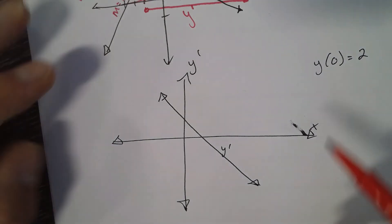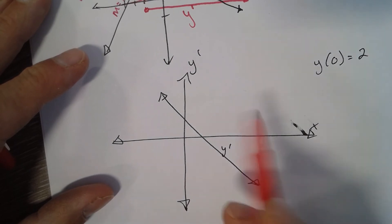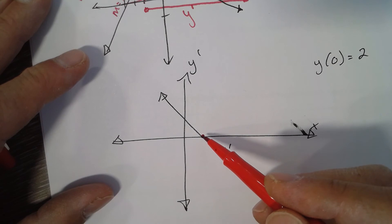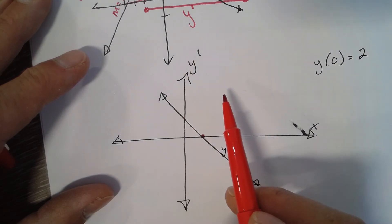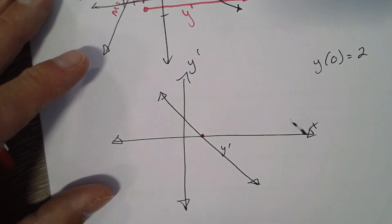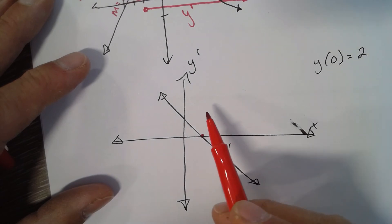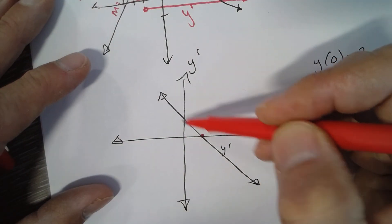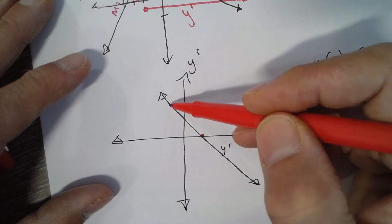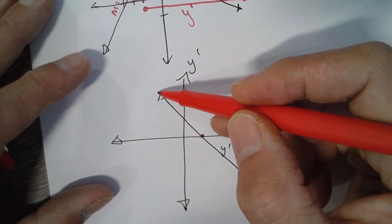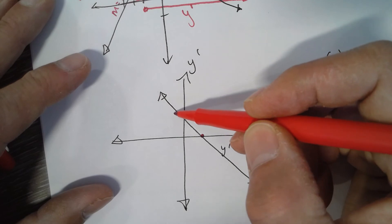Now I can graph the original. Looking at the derivative, the most important point is where the derivative is 0 — that means we have a horizontal tangent, either a max or a min. To the left of it, y prime is positive — above the x-axis — so the original function is increasing. It's increasing just a little, then more and more, getting really steep, then less steep, then 0 at that point.